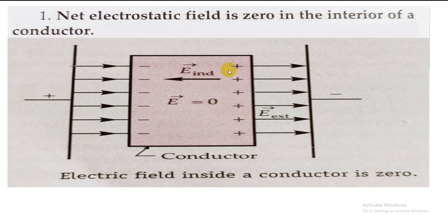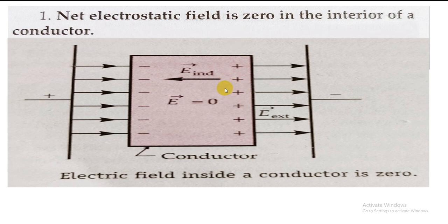As soon as the conductor is placed, we know that free electrons exist inside conductors. So whatever positive charges are there, an equal number of electrons will accumulate at the edge near the positively charged plate. These induced charges produce their own electric field — we call it the induced electric field, or electric field due to polarization, because the process is also known as polarization. This induced electric field E_ind runs from the positive to the negative induced charge inside the conductor.